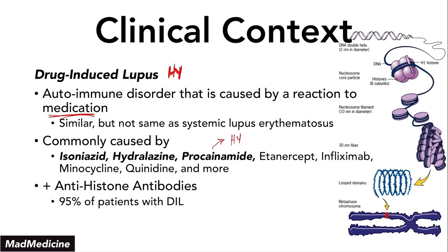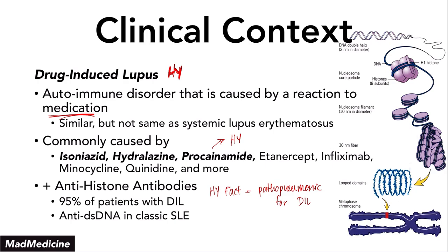This is a very high-yield fact because it is essentially pathognomonic for drug-induced lupus. Because in the classic version of lupus — classic SLE — you will see anti-double-stranded DNA antibodies. But in drug-induced lupus, you will see anti-histone antibodies. The way I like to think about it: SLE actually attacks the double-stranded DNA, whereas drug-induced lupus actually attacks the histones. So this is one of the clinical correlations of why histones are so important and how processes that interact with these proteins lead to disorders and pathologic states.